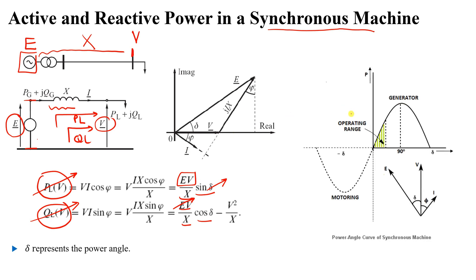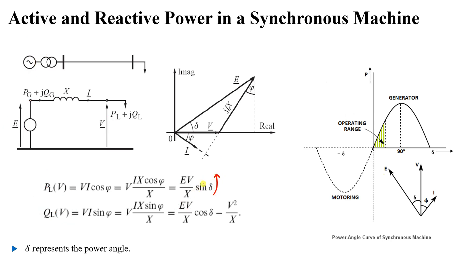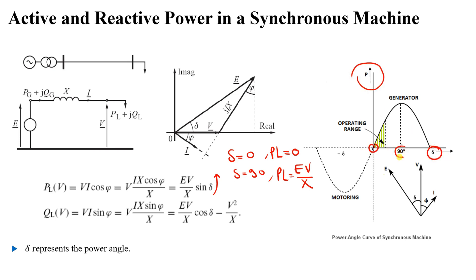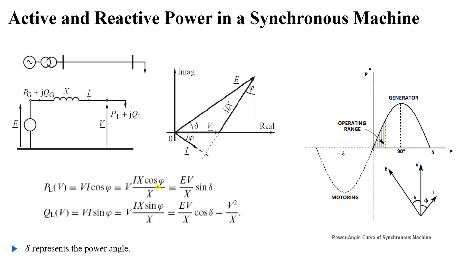As delta increases from zero to 90 degrees: when delta equals zero, sin(0) = 0 so P_L equals zero. When delta equals 90 degrees, the generator delivers maximum power EV/X. You can see from the graph of P versus delta that as delta increases from 0 to 90 degrees, the output power increases to its peak value. So for active power, by controlling delta you are directly controlling the active power output.